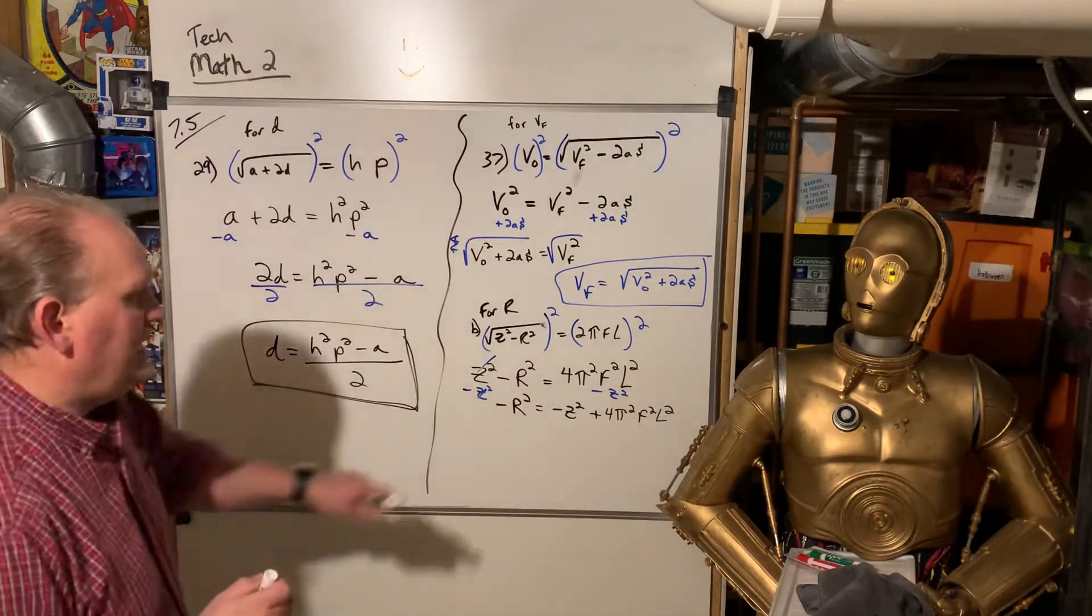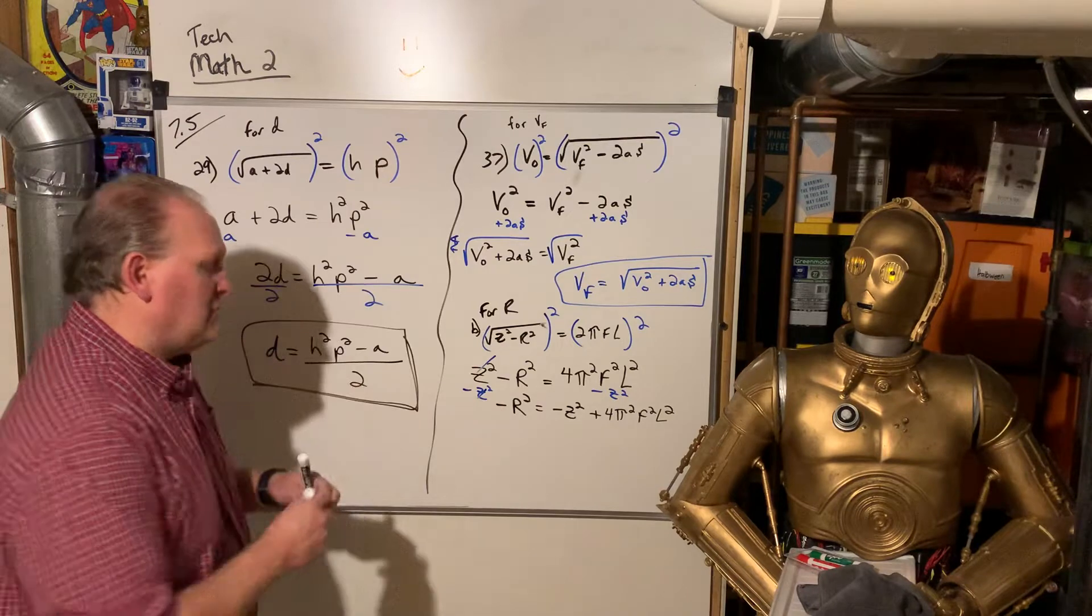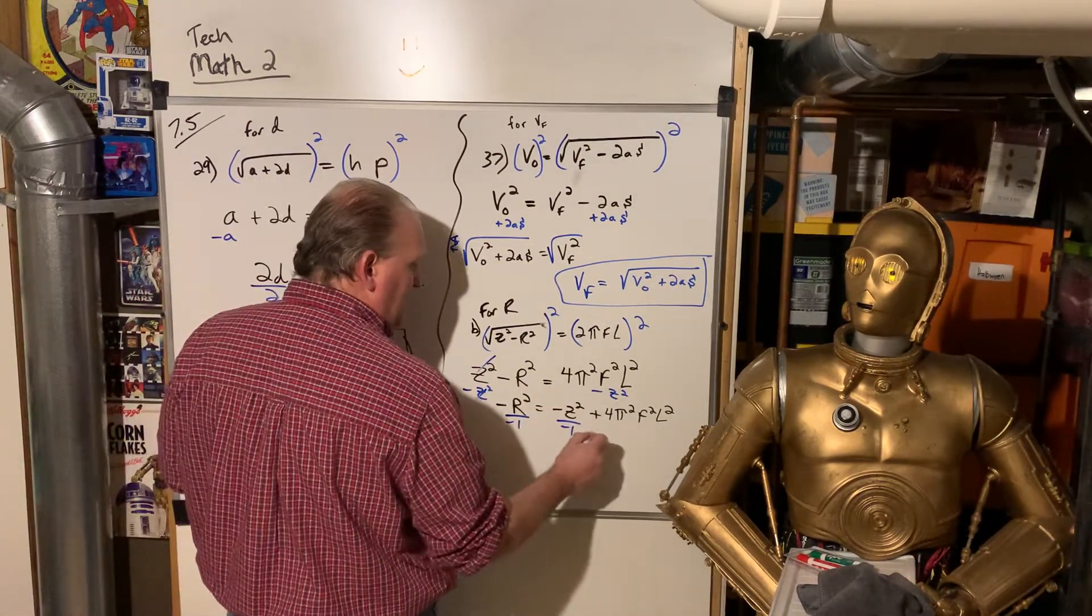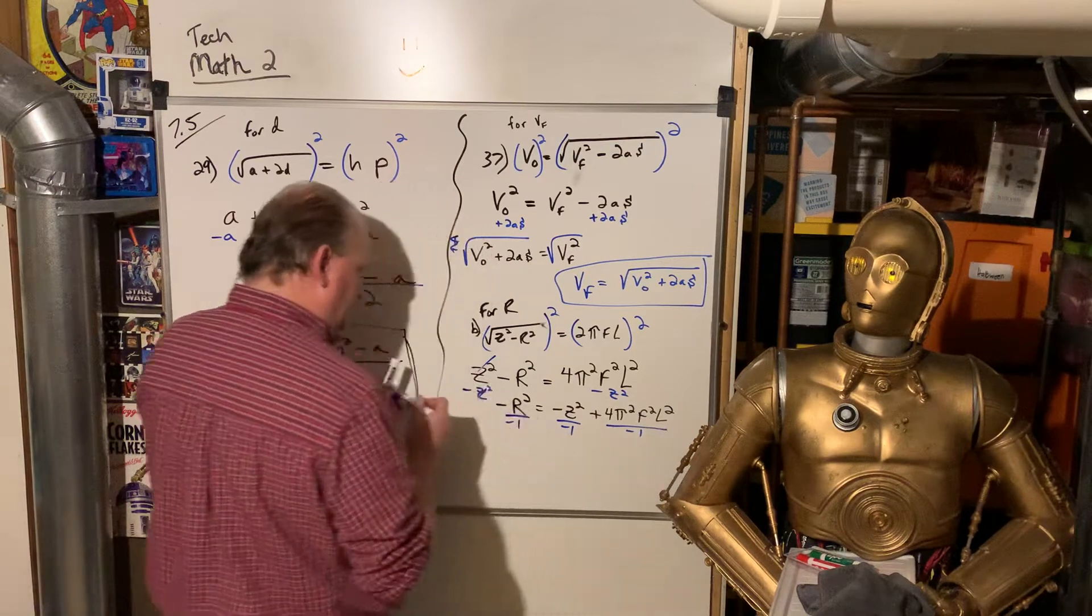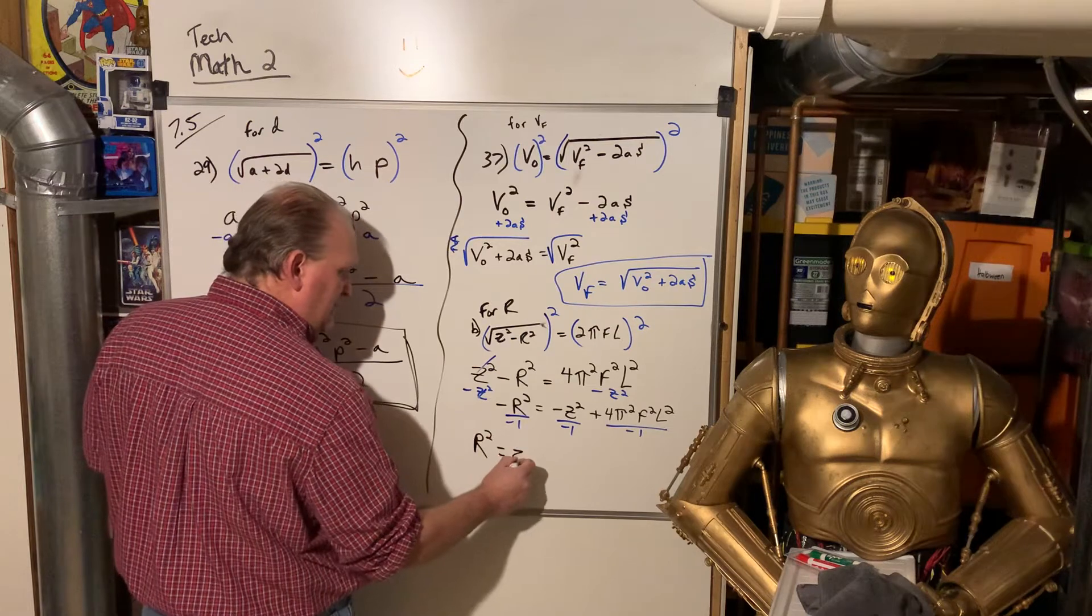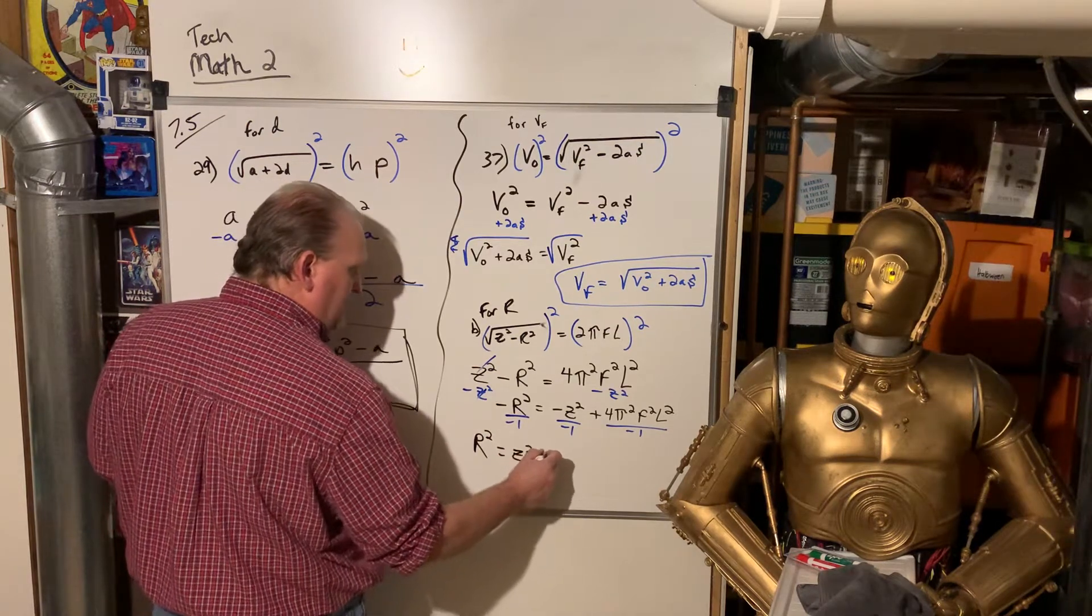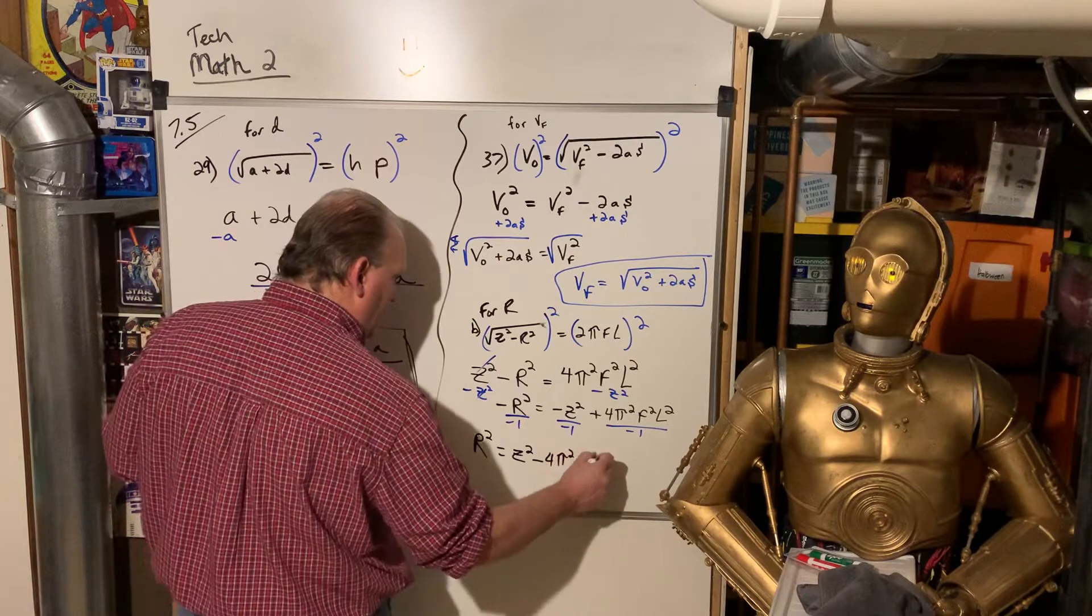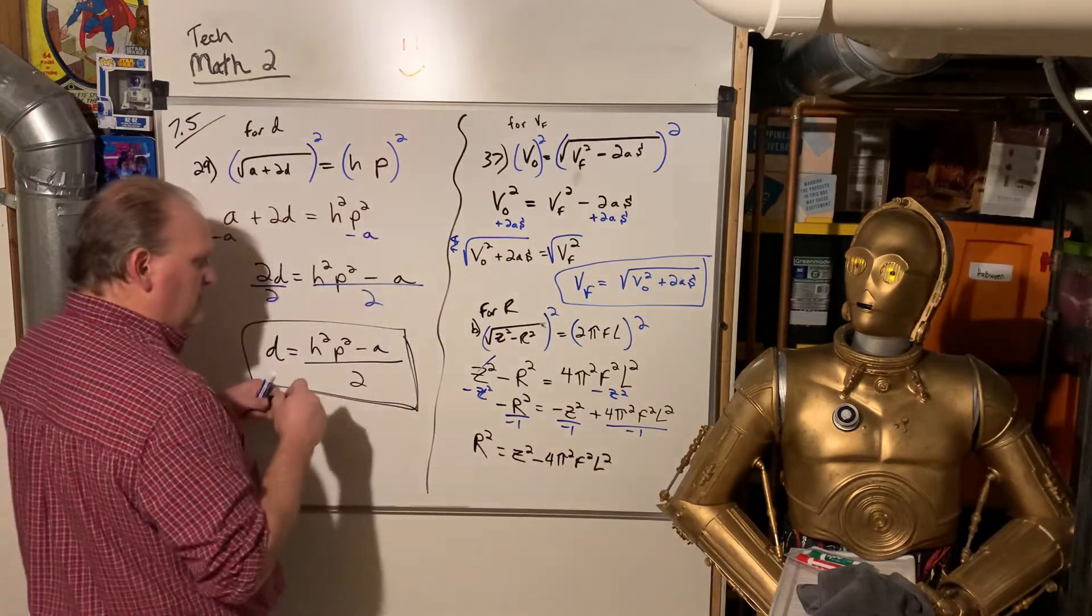So you have negative R squared is equal to negative Z squared plus 4 pi squared F squared L squared. And now this negative is still in front of the R squared. Before we do the square root, we have to divide everything by negative 1.